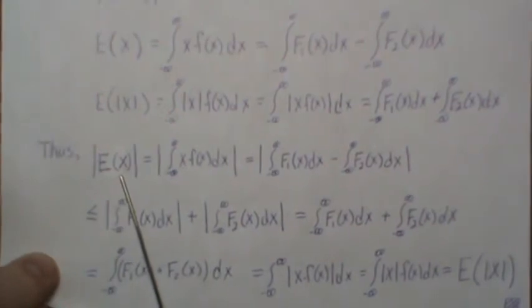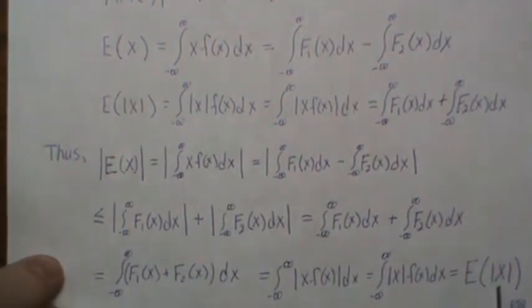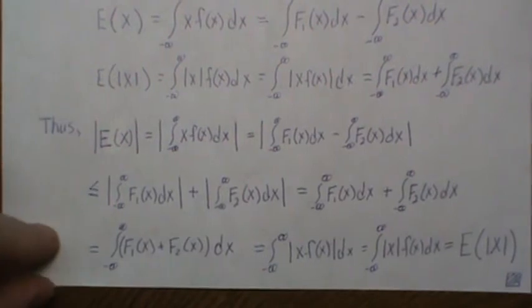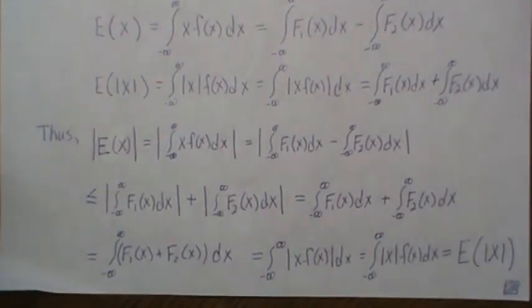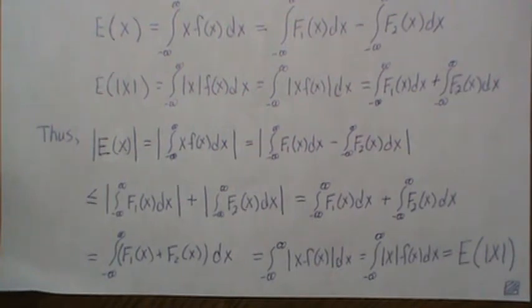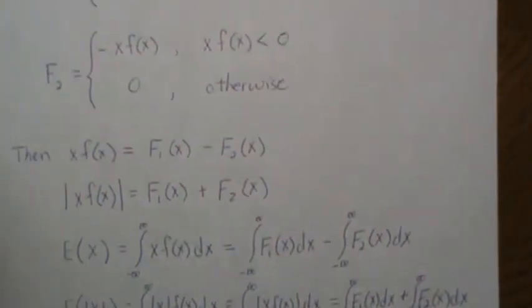So we've just shown that this quantity is less than or equal to this quantity, and that's what we wanted to show. We're going to use that when we show that the characteristic function is bounded.